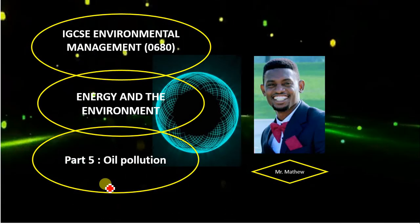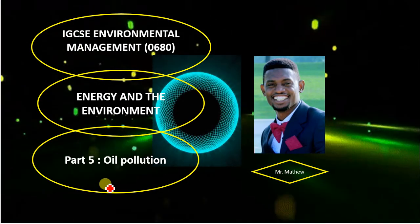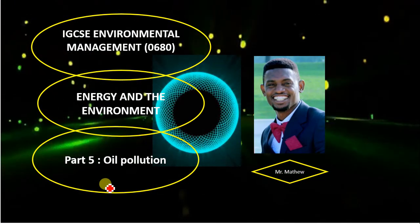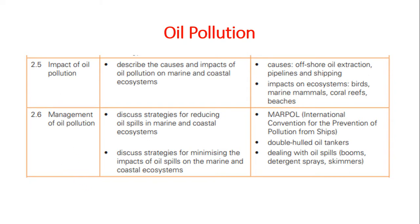This will be the last part of Environmental Management, Chapter 2 Part 5, where we look at oil pollution. The major content of the syllabus covers the impact of oil pollution on marine and coastal ecosystems. We look at the causes — offshore oil extraction, pipelines, and shipping — and the impacts on birds, marine mammals, coral reefs, and beaches. We also look at management of oil pollution and the different strategies involved.